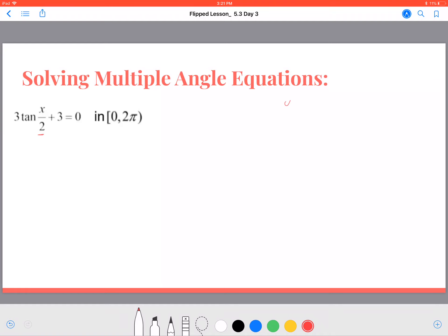All right, this time I'm going to substitute. I'm just going to create any variable there and say y equals 1 half of x or x over 2. And I'm going to rewrite this as 3 times the tangent of y plus 3 equals 0, which will be the tangent of y equals negative 1.